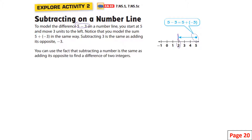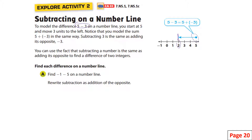You can use the fact that subtracting a number is the same as adding the opposite to find the difference of two integers. So we have negative one minus five. We write this subtraction as adding the opposite: negative one minus five is the same thing as negative one plus negative five. This is a very important concept.